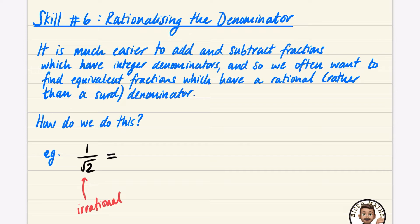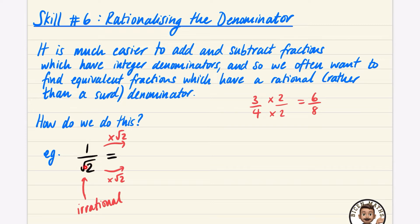If you take any fraction — say three quarters — and multiply the top and bottom by the same thing, say two, you get six over eight, which is an equivalent fraction. So as long as you multiply the numerator and denominator by the same value, the fraction stays equivalent. For one over root two, we multiply top and bottom by root two. The numerator becomes one times root two, which is root two, and the denominator becomes root two times root two, which is two.